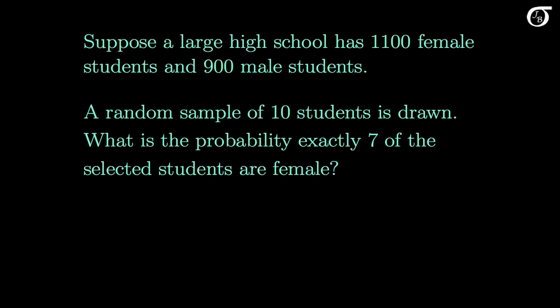Let's look at a different example. Suppose a large high school has 1,100 female students and 900 male students for 2,000 students in total. A random sample of 10 students is drawn, and we want to find the probability that exactly 7 of the selected students are female. Although it doesn't state it explicitly, it's implied that the sampling is done without replacement. If we let the random variable X represent the number of female students selected, then we need to find the probability that X takes on the value 7. I strongly recommend thinking through the problem logically rather than plugging directly into the formula.